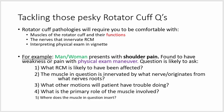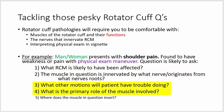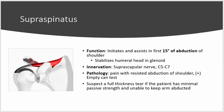A typical question will sound something like: a man or woman presents with shoulder pain and is found to have weakness or pain with some physical exam maneuver. The question is likely to ask: what rotator cuff muscle is affected; what nerve innervates it or what nerve roots in the brachial plexus does it originate from; what other motions will the patient have trouble doing; or what is the primary role of the muscle involved. Where the muscle inserts or originates is fairly low yield and will not be a major focus.